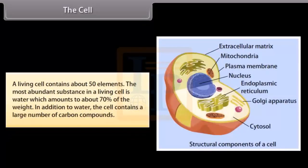A living cell contains about 50 elements. The most abundant substance in a living cell is water, which amounts to about 70% of the weight. In addition to water, the cell contains a large number of carbon compounds.